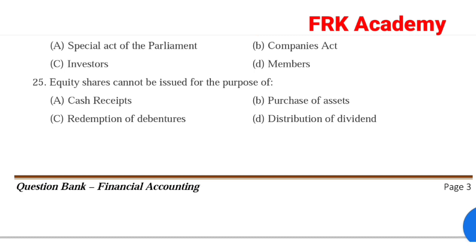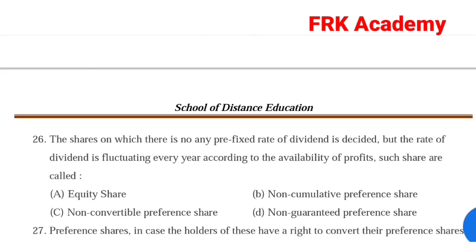Question: The shares on which there is no fixed right of dividend, and the right of dividend is fluctuating every year according to the availability of profit — such shares are called. Answer: Option A, equity shares.